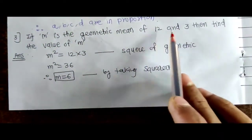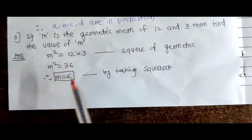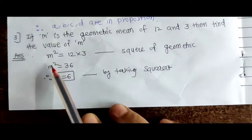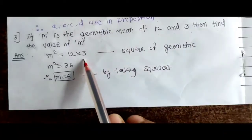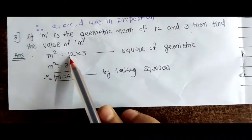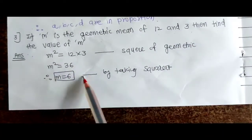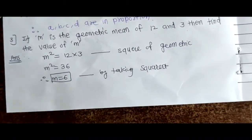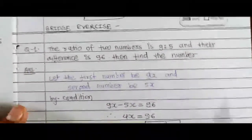Third question: if m is the geometric mean of 12 and 3, then find the value of m. Agar geometric mean hai toh m squared equals 12 into 3. So m squared equals 36, therefore m equals 6 by taking the square root.